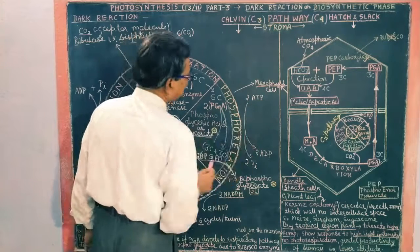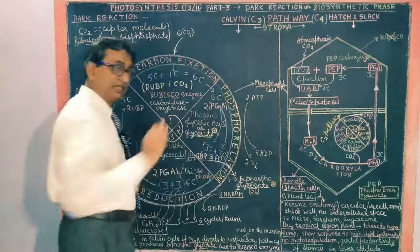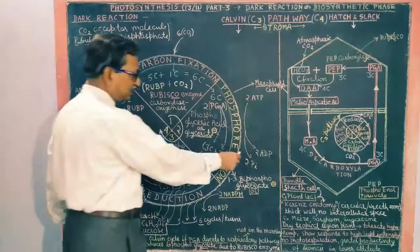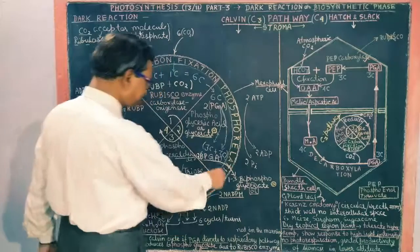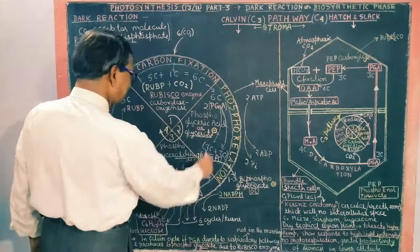This is 2 bisphosphate glycerate. This is phosphorylation from the PGA. There are two ATP molecules that were made here, the ATP molecules that were made in the light reaction come here, it gets cut down here. Now let's move on to this, what happens after this?